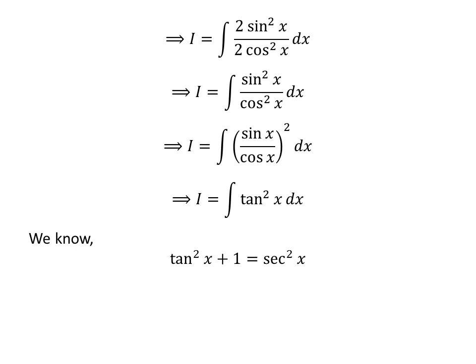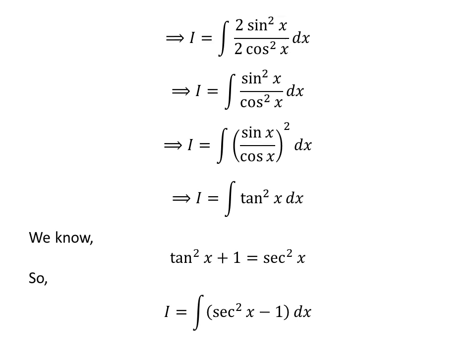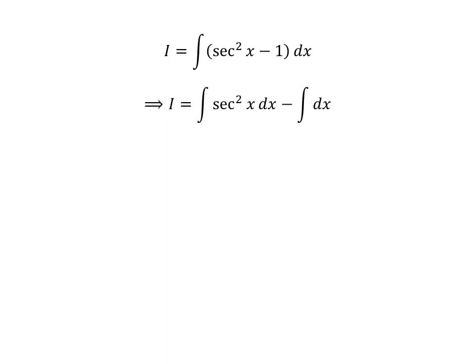The video card in the upper right corner contains the derivation of this identity, and the link is also given in the description section. Thus, I is equal to the integral of (square of secant of x minus 1). Now let us apply the linearity property of the integral, giving us I equal to the integral of square of secant of x minus the integral of 1, with respect to x.